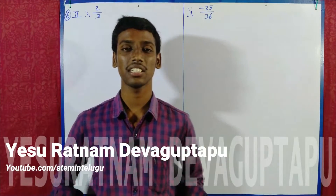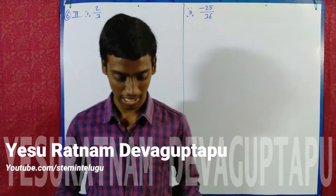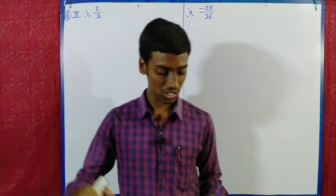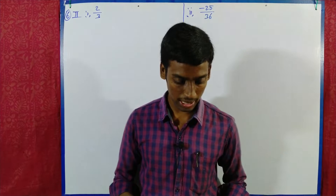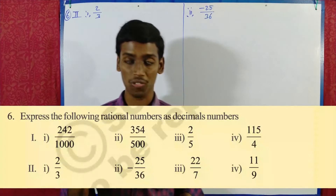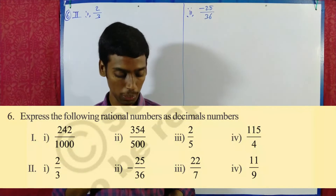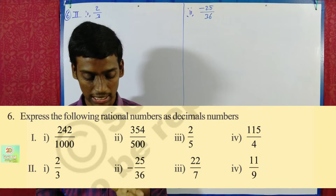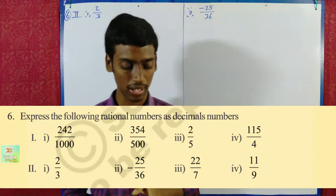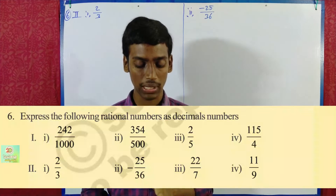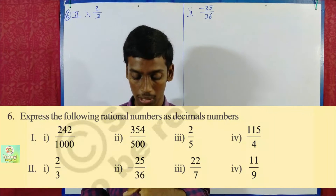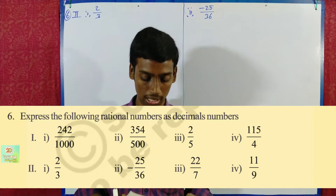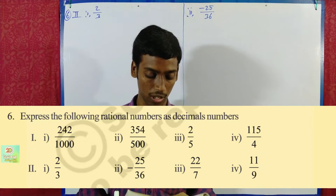Welcome students, this is Esratmu Mirjusna Staminthi. In the last video we did the first row in exercise 1.1, and now we will do the second row. Now we will express the following rational numbers as decimal numbers.